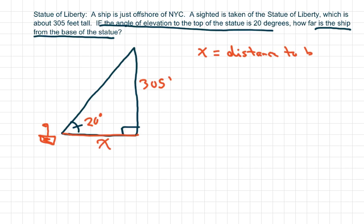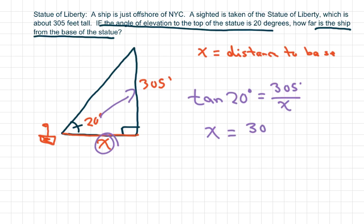So what we have here is our tan function. Tan of 20 degrees equals opposite over adjacent. You cross multiply and you get X equals 305 feet over tan of 20 degrees, which is approximately 837.98 feet.